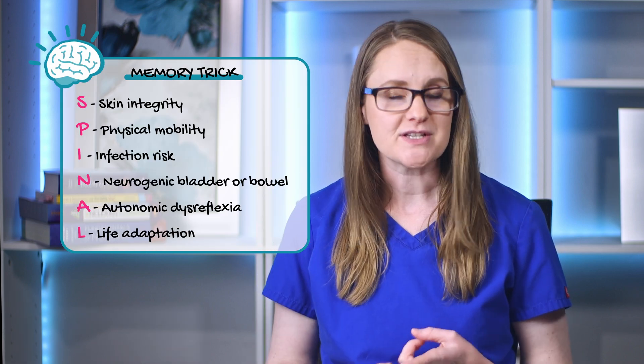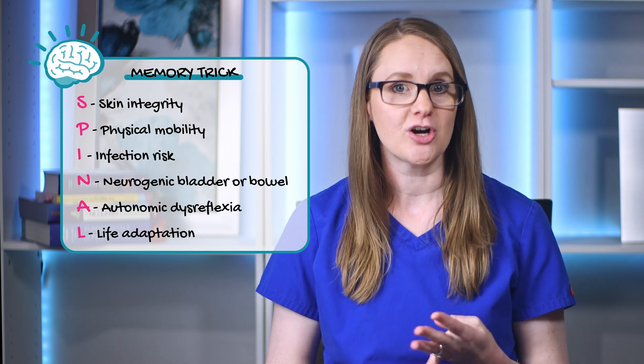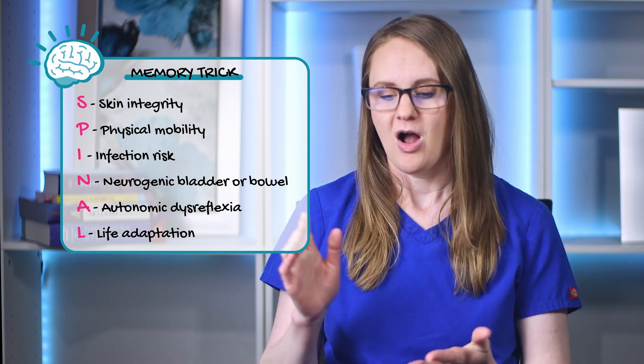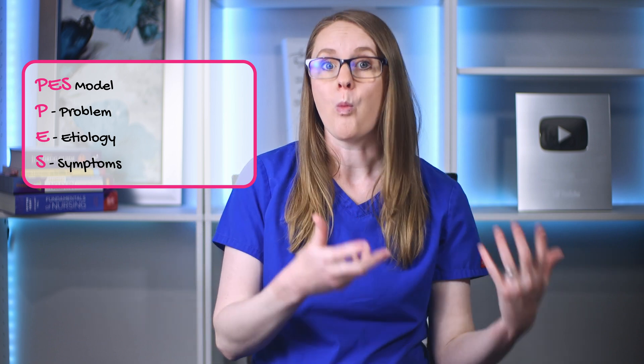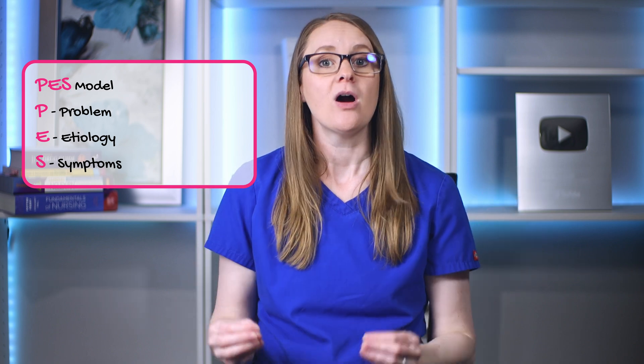Remember the SPINAL mnemonic: think skin integrity, physical mobility, infection, neurogenic bladder or bowel, autonomic dysreflexia, and life adaptation. There are three parts of a complete nursing diagnosis — we call this the PES model: problem, etiology, and symptoms. The problem is that first NANDA label; the etiology is the related-to factors, or the 'why'; and the symptoms are the 'as evidenced by' part of the nursing diagnosis — it's the proof, the evidence for that diagnosis.